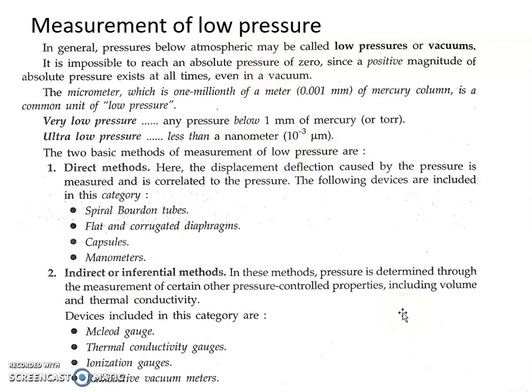Pressures below atmospheric pressure may be called low pressure or vacuum pressure. Practically it is impossible to reach an absolute zero pressure because even vacuum has a certain pressure. That is why practically zero absolute pressure does not exist, and low pressure is also called vacuum pressure.